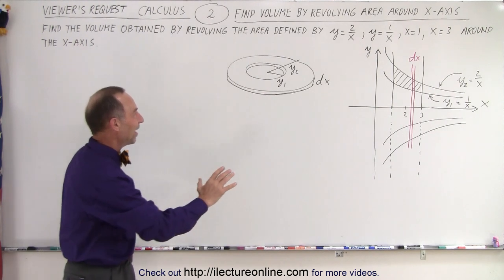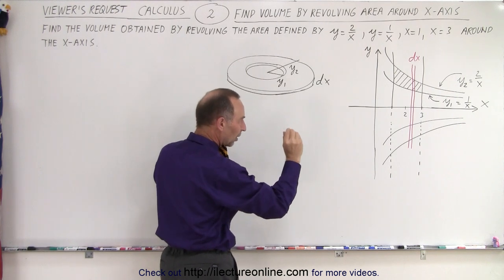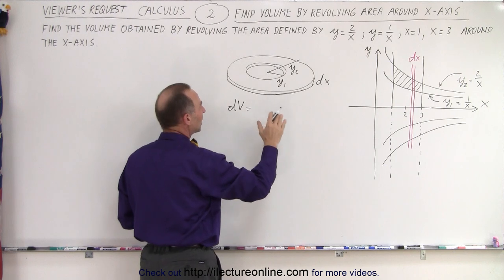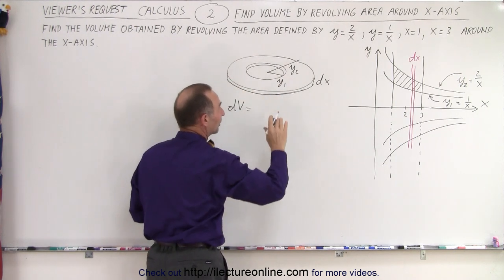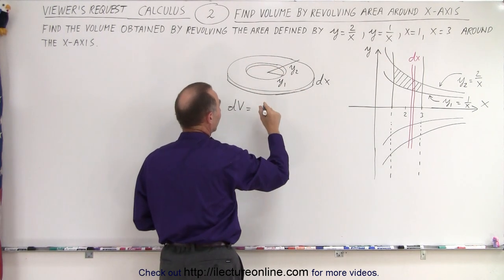So now we need to define the volume of this. It's a small volume element, so we'll call it dV. And dV would be equal to the area times the thickness. The area can be obtained by taking the full area and subtracting the inner area from that.